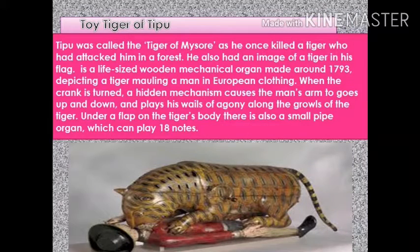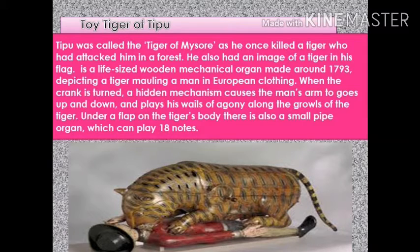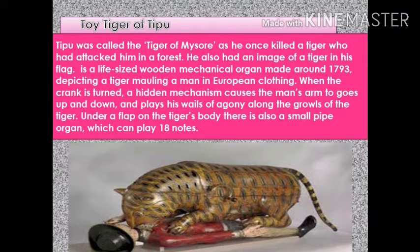Tipu Sultan was called the Tiger of Mysore, as he once killed a tiger that attacked him in a forest. He also had an image of a tiger in his flag. He possessed a life-sized wooden mechanical toy tiger, made around 1793, depicting a tiger mauling a man in European clothing. When the crank is turned, a hidden mechanism causes the man's arm to go up and down and plays the man's wails along with the growls of the tiger. Under a flap on the tiger's body there is also a small pipe organ which can play 18 notes — this was known as the Toy Tiger of Tipu.